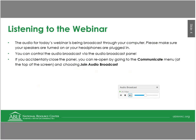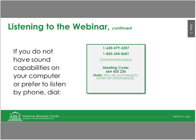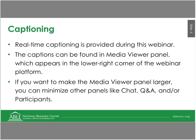The audio for today's webinar is being broadcast through your computer. Please make sure your speakers are turned on or your headphones are plugged in. You can control the audio broadcast via the audio broadcast panel. If you accidentally close the panel, you can reopen it by going to the Communicate menu at the top of the screen and choosing Join Audio Broadcast. If you do not have sound capabilities, the dial-in information is on the right-hand side of the screen. Real-time captioning is provided during this webinar in the Media Viewer Panel, which appears in the lower right-hand corner. You can minimize other panels such as the Chat Panel, the Q&A Panel, or the Participants Panel to make it larger.